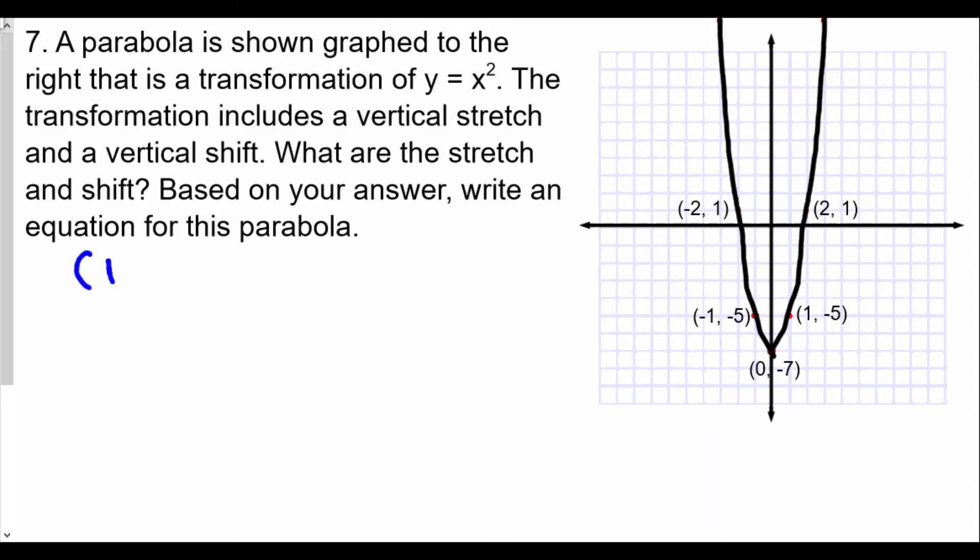We see in this case that the original vertex should be zero comma zero, and the new vertex is at zero comma negative seven. Now I want to be very clear about this though: our vertical shift is going to occur at the very end. The reason is a vertical stretch is a multiplication of the function itself. Vertical stretch is a multiplication of the function itself, and multiplication comes before any adding or subtracting. So we definitely see in this case that we're going to shift at the end by subtracting seven to the function.